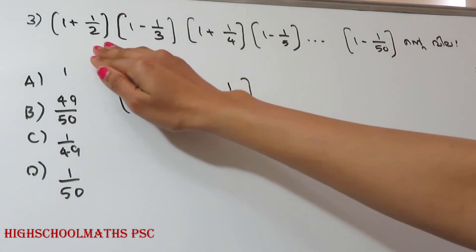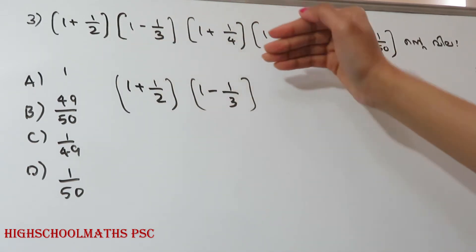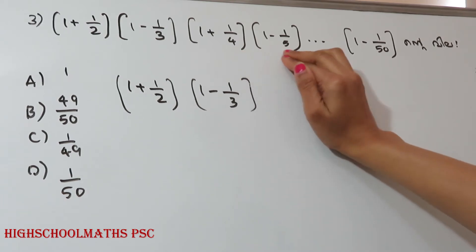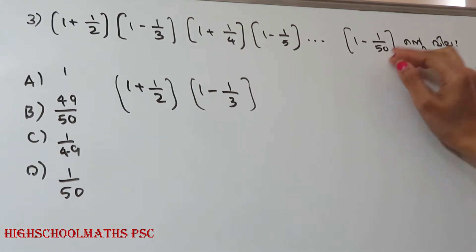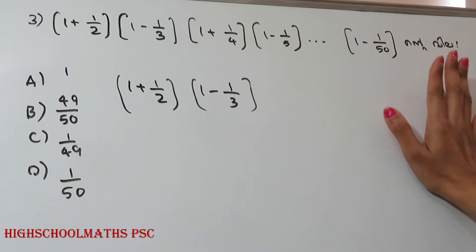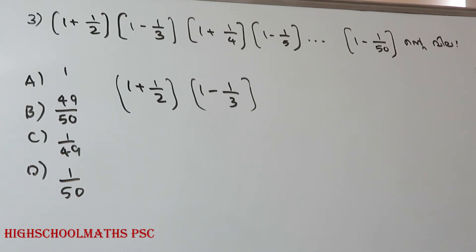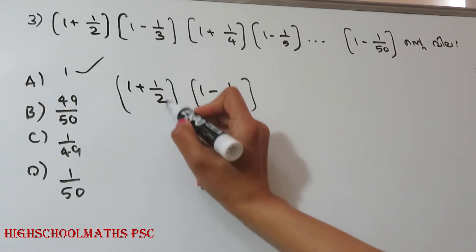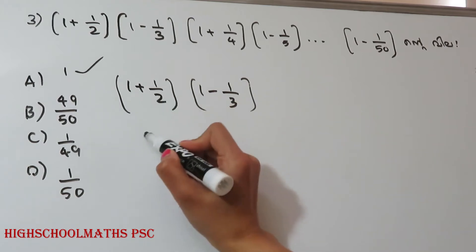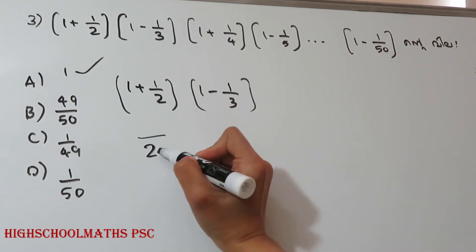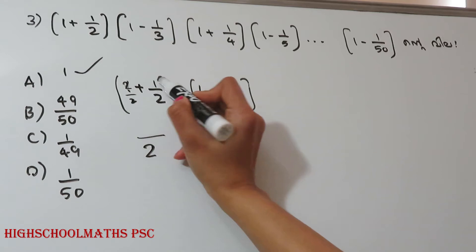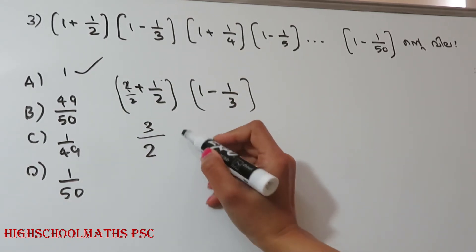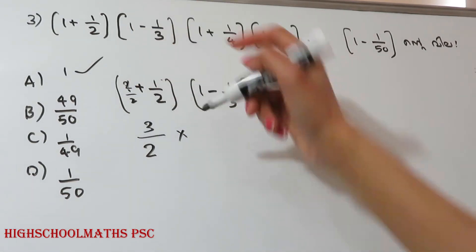Question 3. We have the expression: 1 plus 1 by 2, times 1 minus 1 by 3, times 1 plus 1 by 4, times 1 minus 1 by 5. Now, what is the answer? Option A is one answer. What is the value? The value of the denominator is 2. What is the value of the denominator? 2 by 2. 2 plus 1 is 3.